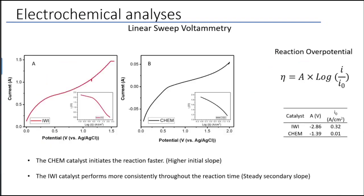The linear sweep voltammetry was also conducted to look at the reaction potential. As you can see, the chemically reduced catalyst has a very earlier inflection point that shows that we have a reaction initiated faster, but incipient wetness catalyst has a more reliable potential curve, which shows a more consistency and steady secondary slope that is required for a consistent conducting of reaction.